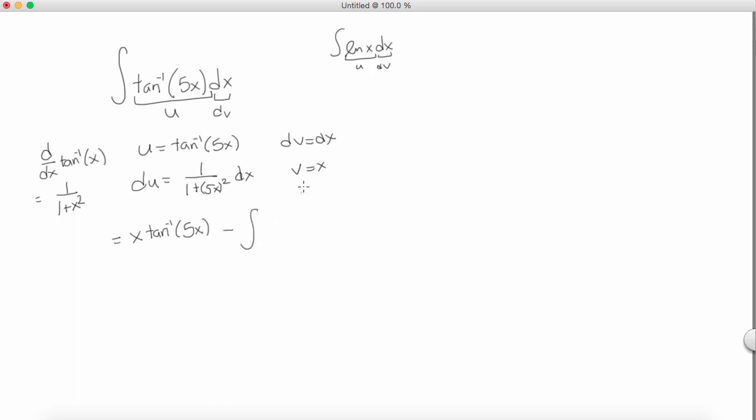Minus the integral of v, which is x, multiplied by du. And in this case du is 1 over 1 plus 5x squared. 1 plus, and I'm going to write 25x squared, multiplying that through, dx.